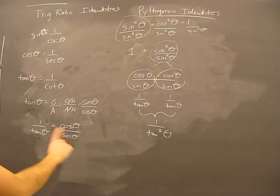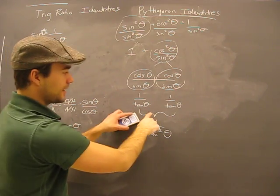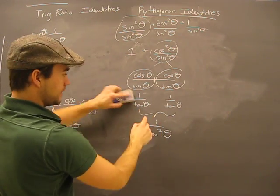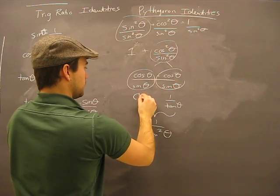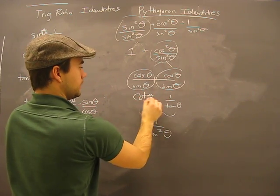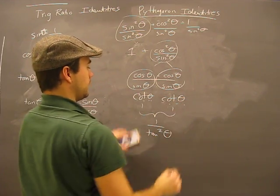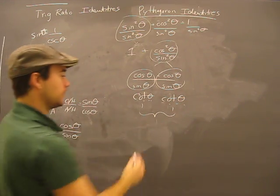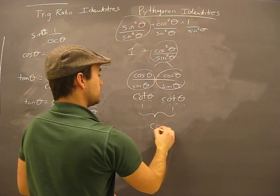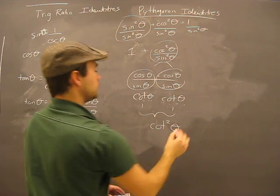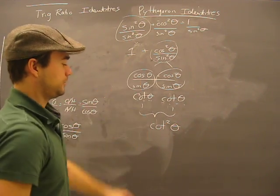Well, 1 over tangent, let's be smart about this. This, again, is cotangent over 1. So let's say 1 over tangent squared, we would say it's simply cotangent squared theta. So that's what this whole mess becomes.